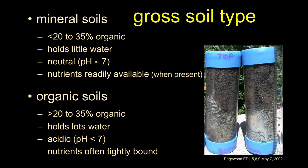We're trying to be able to walk to a site and talk about the gross type of soil we have. Here on the right are some soil cores from one of my old restoration sites. Clear tubes show the soil profile — the top of the screen corresponds to the soil surface. Toward the bottom of the tube you see what looks whiter and more granitic — more rocky type stuff. That would be mineral soils.